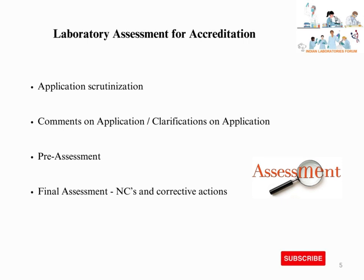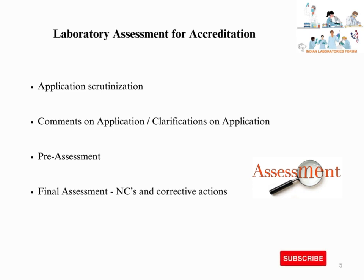Upon submission of the application, the accreditation body will scrutinize it, and if any clarifications or corrections are needed, those details will be communicated to the laboratory for further corrections and resubmission. Upon submission of the corrected application, the accreditation body will plan a pre-assessment — this pre-assessment is optional for most accreditation bodies. If the laboratory is not willing to proceed with pre-assessment, it should provide proper justification to skip it. If the laboratory opts for pre-assessment, the accreditation body assigns auditors who visit the laboratory and provide observations.